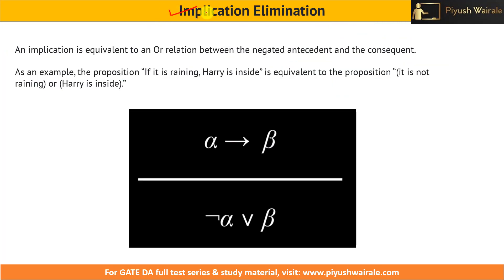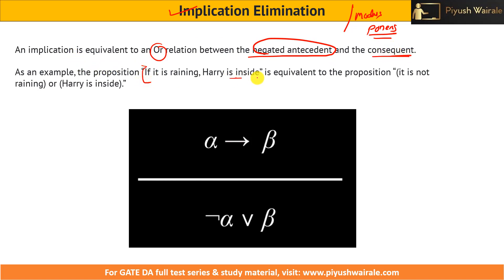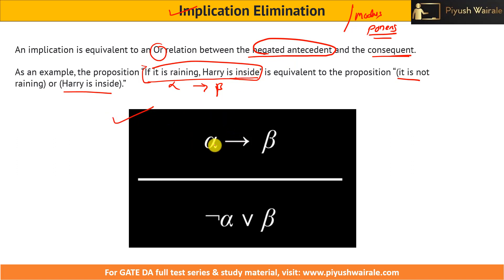Implication elimination and modus ponens are different things. An implication is equivalent to an or-relation between the negated antecedent and the consequent. For example, the proposition 'if it is raining, Harry is inside' — alpha implies beta — is equivalent to 'it is not raining or Harry is inside.' So alpha implies beta is equivalent to negation of alpha or beta. This is called implication elimination.